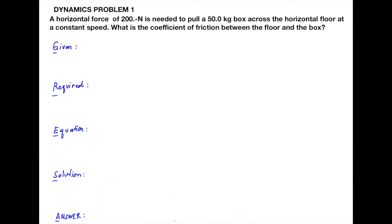Problem 1: A horizontal force of 200 Newton is needed to pull a 50 kilogram box across the horizontal floor at a constant speed. What is the coefficient of friction between the floor and the box? To start, we have to identify the given values and draw the free body diagram.